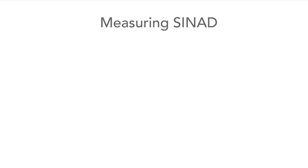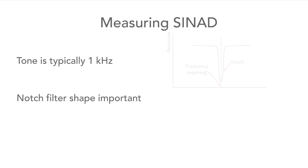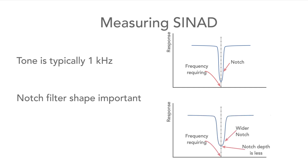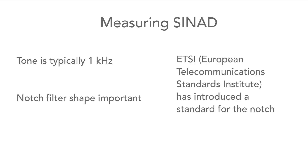In terms of the practicalities of making SYNAD measurements, the tone used is typically 1 kHz. The shape of the notch filter is very important — in an ideal world it would be infinitely sharp and have no insertion loss, but this is not possible in the real world. To overcome this, ETSI, the European Telecommunication Standards Institute, defined a notch filter with a 1 kHz notch attenuating the tone by at least 40 dB and with specifications for insertion loss at various frequencies.